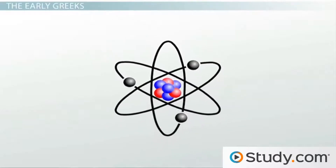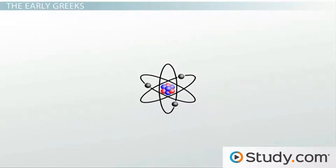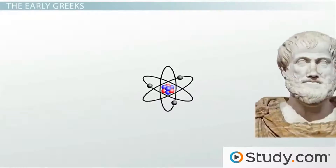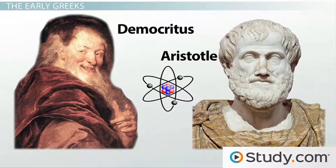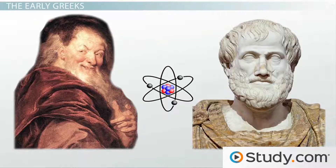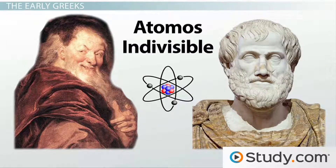First, we are going to travel back a little over 2,000 years ago to the times of Aristotle and Democritus. The Greek philosopher Aristotle believed that matter could be divided infinitely without changing its properties. Democritus disagreed. He thought that matter could only be divided until you got to the smallest particle, which he called the atom, coming from the Greek word atomos, meaning indivisible.